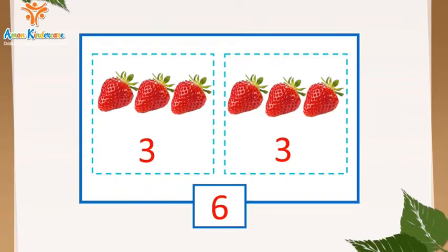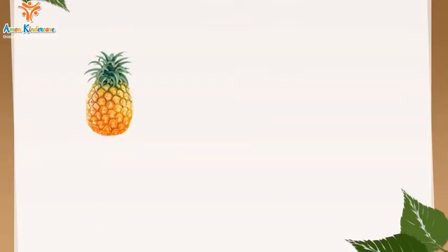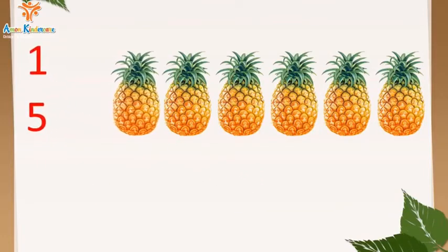Vậy là các con đã hiểu thế nào là thêm vào rồi phải không? Bây giờ cô sẽ thưởng cho chúng mình một trò chơi mang tên Ai Thông Minh. Cô có 1 quả dâu thêm 5 quả dâu nữa. Hỏi rằng cô có bao nhiêu quả dâu? Như vậy 1 quả dâu thêm vào 5 quả dâu bằng 6 quả dâu. Hay 1 thêm 5 bằng 6.